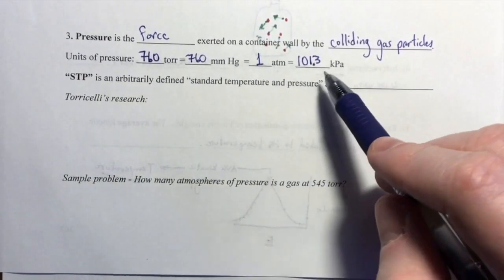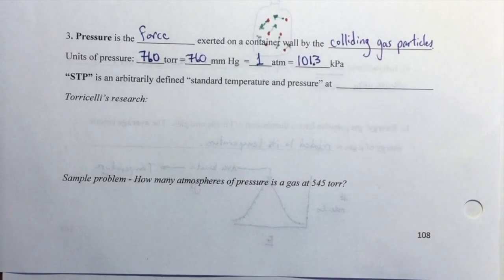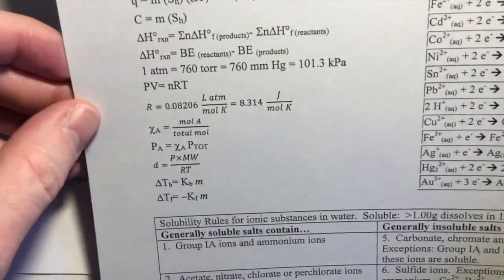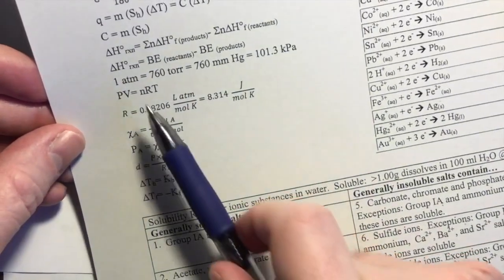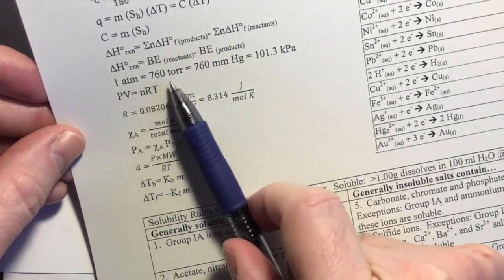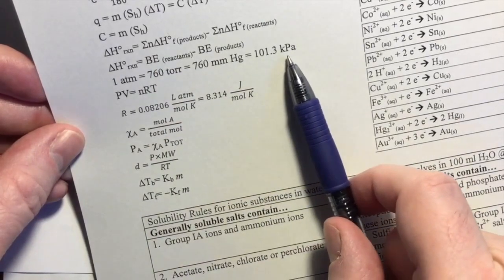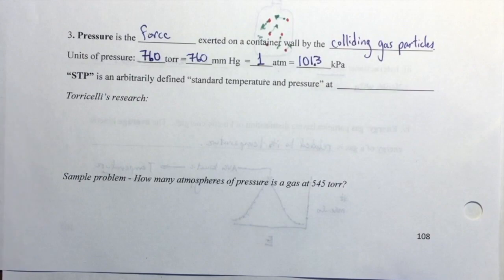For now, you need to know how to convert between them. On the back of our periodic table, we've given you some resources. One atmosphere equals 760 Torr equals 760 millimeters of mercury equals 101.3 kilopascals. So you have those conversions if you need them.